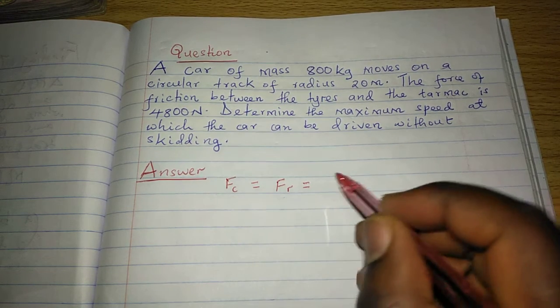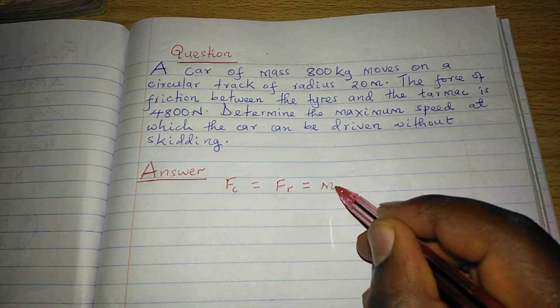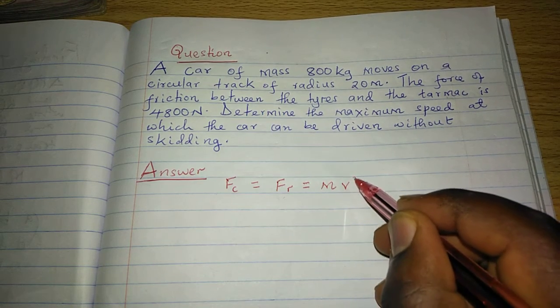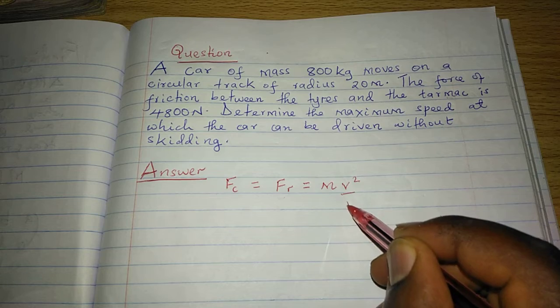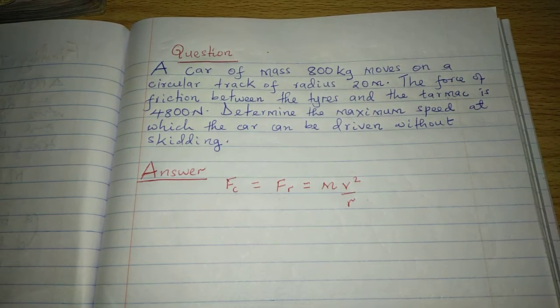Mass times velocity squared divided by the radius of the path.